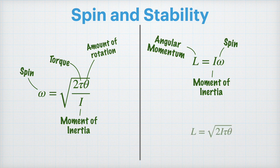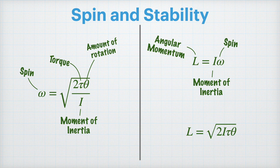Now angular momentum depends on both moment of inertia and spin. If I use my equation for spin on the left, we can see that the amount of angular momentum now has a direct relationship with the moment of inertia. In other words, the more moment of inertia that I put on the disc, the more angular momentum it'll get.